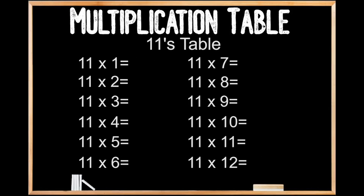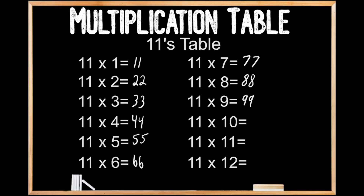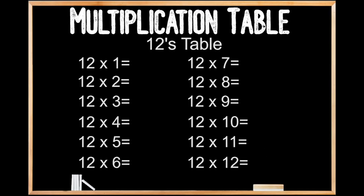11's table. 11 x 1 is 11. 11 x 2 is 22. 11 x 3 is 33. 11 x 4 is 44. 11 x 5 is 55. 11 x 6 is 60. 11 x 7 is 76. 11 x 8 is 88. 11 x 9 is 99. 11 x 10 is 110. 11 x 11 is 121. And 11 x 12 is 132. 12's table.